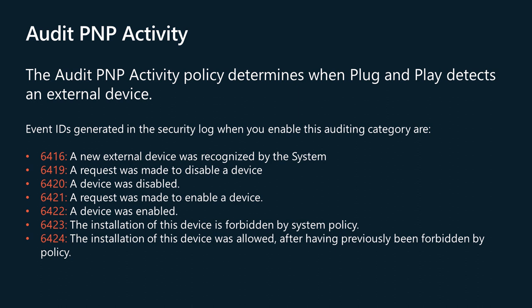Events in the security log related to this auditing item include: 6416 — A new external device was recognized by the system. 6419 — A request was made to disable a device. 6420 — A device was disabled. 6421 — A request was made to enable a device. 6422 — A device was enabled.